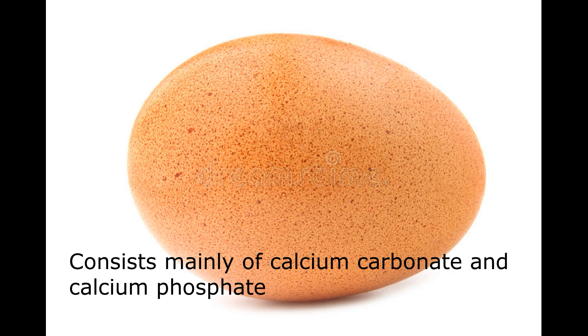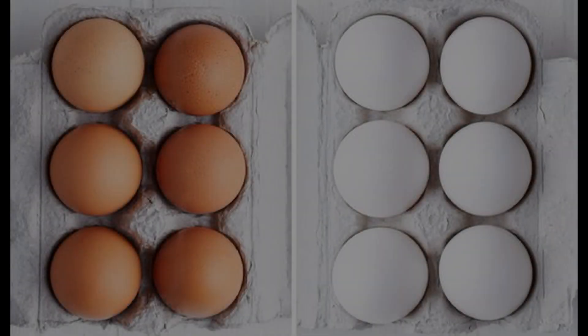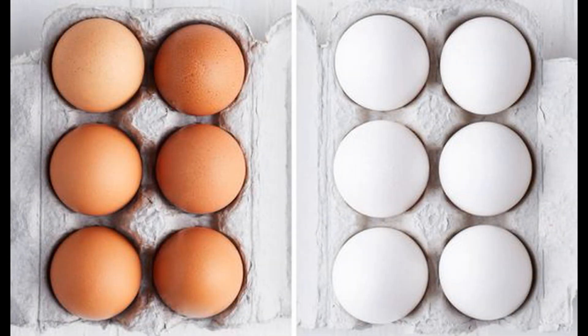Only the outer layer of the shell is colored. The color of the shell can be white or brown, depending on the breed. A white hen lays white eggs, and a brown hen lays brown eggs. There are also white hens that lay brown eggs.